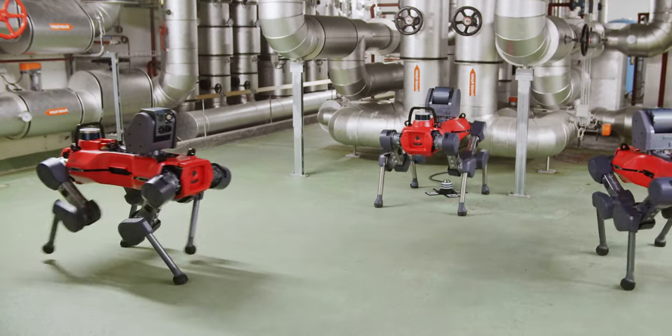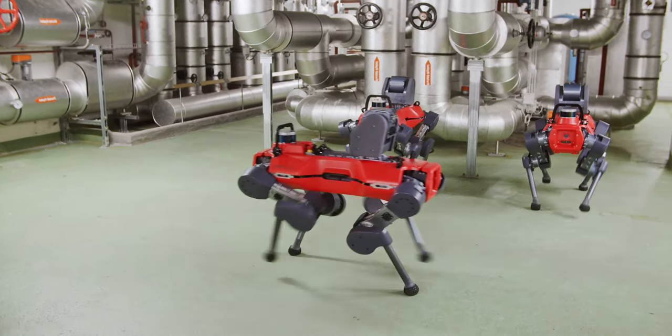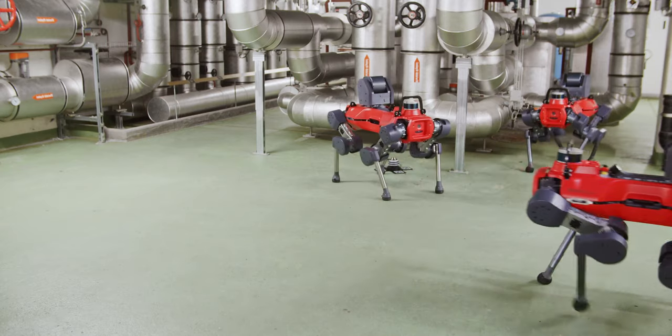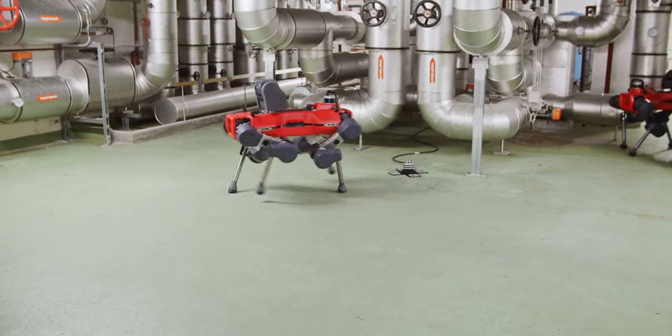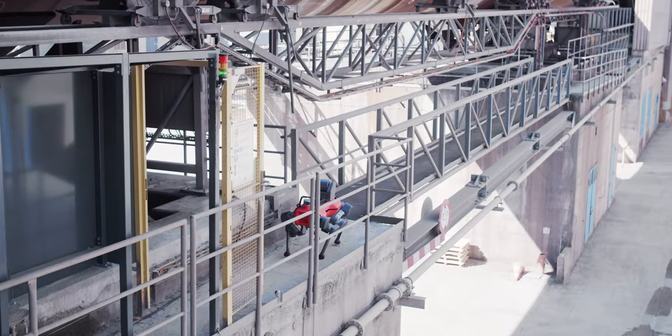AniMall goes anywhere. But with a robotic fleet, you can go everywhere. Deploy your fleet throughout your plants and have your own team of robots working on different tasks around the clock.